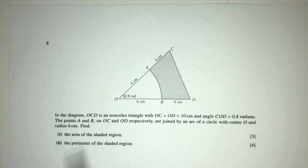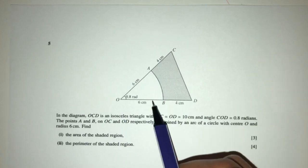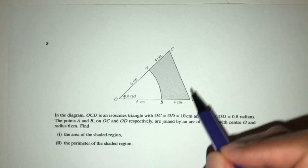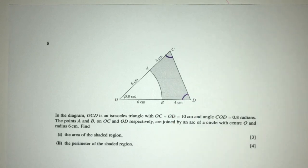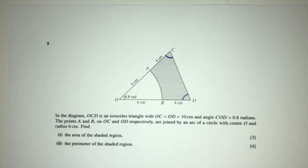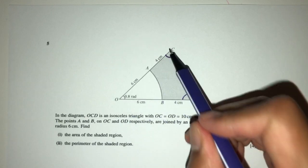So here we have in the diagram OCD is an isosceles triangle. This means that this side and this side are the same, or this angle and this angle are the same. Now with OC equal to OD equal to 10, as we can see here, 10 and 10.